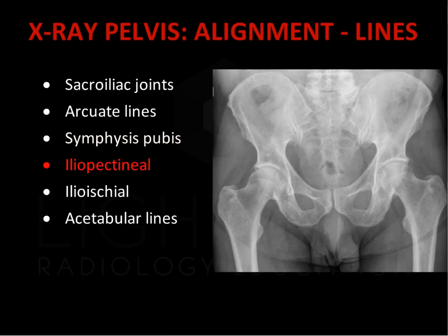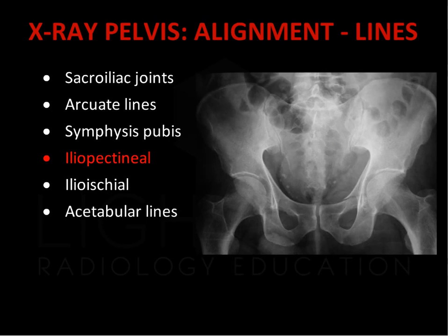The iliopectineal line is formed by the pectineal crest of the iliac bone. This should be a smooth curve with no cortical disruption. In this case, there is disruption of the left iliopectineal line related to a comminuted fracture of the acetabulum, which involves the main pelvic ring. Can you see the second injury?